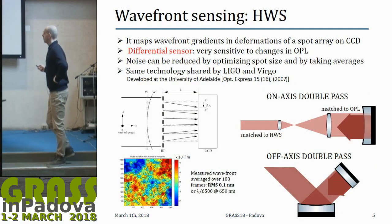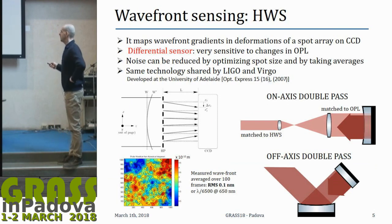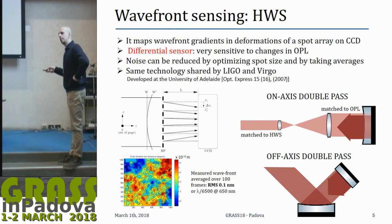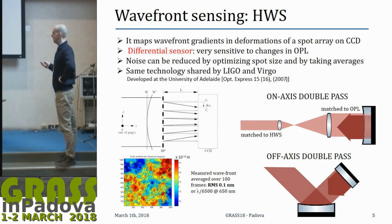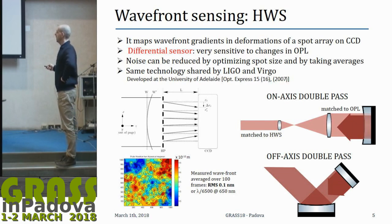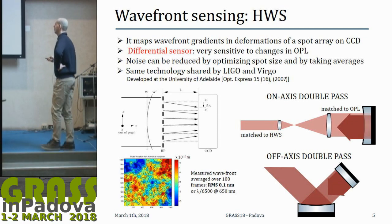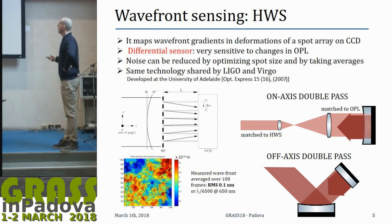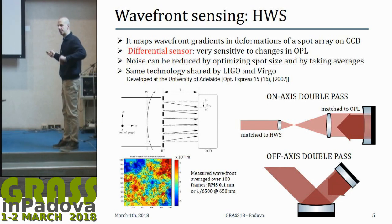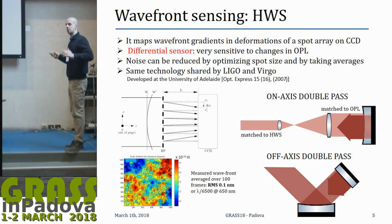For the Hartmann wavefront sensors, they are differential sensors and work as follows. They have a plate with holes, and the holes project spots onto the CCD. From the displacement of this array of spots, you can recover the wavefront deformation in time with respect to a reference, giving a very high sensitivity differential sensor. For instance, with 100 averaged frames you get an RMS residual of 0.1 nanometers, which is very impressive. The sensor is arranged in an on-axis configuration with a telescope to fit the spot dimension optimally to the Hartmann plate and the test mass — a double-pass measurement.